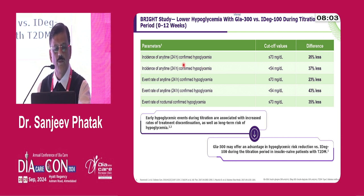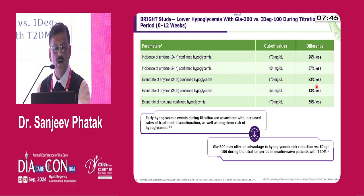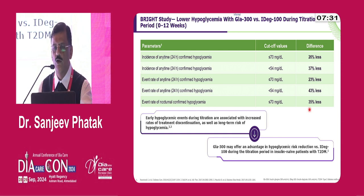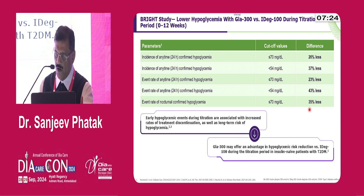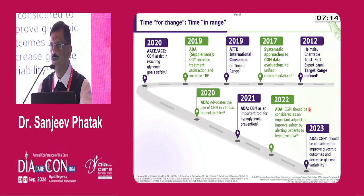If confirmed hypoglycemia at any time with a cutoff of 70 mg/dL, there was 26 percent less hypoglycemia with U300; at a cutoff of 54 mg/dL, it was 37 percent less. For confirmed hypoglycemia over 24 hours with different cutoffs: 23 percent and 43 percent reduction. Nocturnal confirmed hypoglycemia below 70 mg/dL was 35 percent less. Overall, the risk of hypoglycemia in the titration period was significantly lower with glargine U300 compared to degludec.